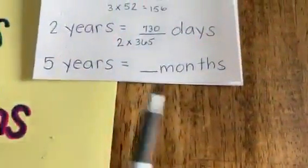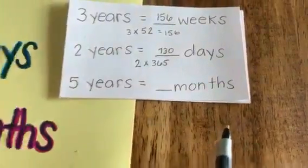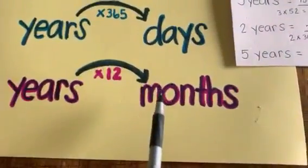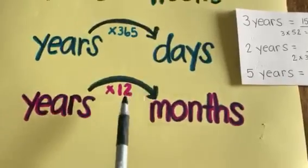What about years to months? Well, how many months are in one year? Did you guess 12? Good job. To go from years to months, multiply by the number of months in one year, which is 12.